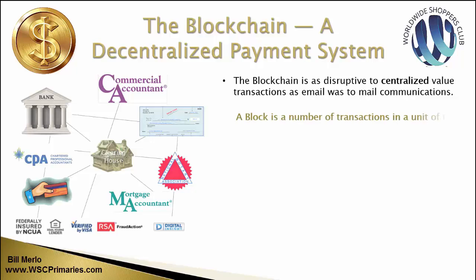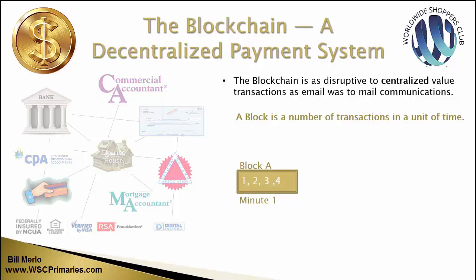So what is a blockchain? Well, a block is a number of financial transactions that happen over a period of time. So this is block A, and block A has one, two, three, four transactions — and let's suppose that was one minute. It could be 10 minutes; it doesn't matter. It's a period of time. So in one minute there were four transactions. That's a block.